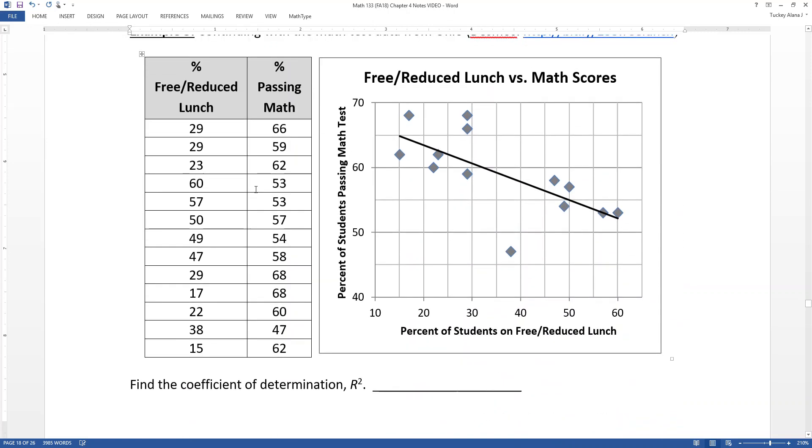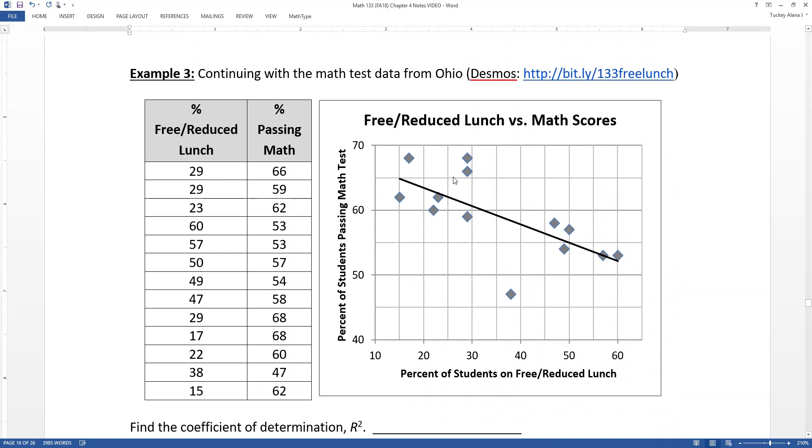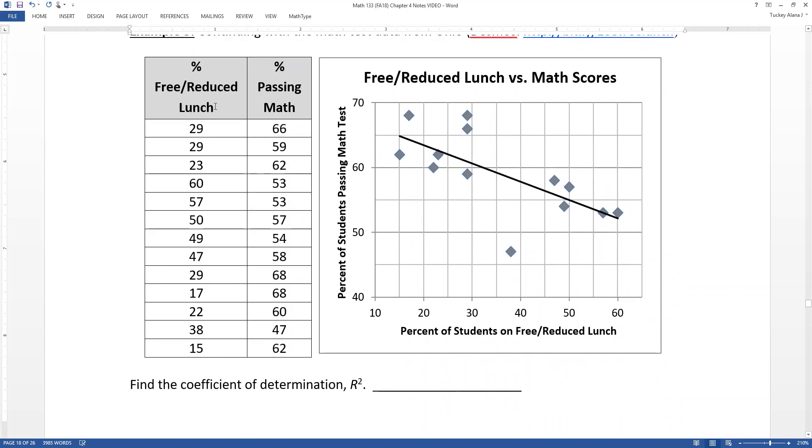All right, so now that we know how to interpret the R-squared value, it would be important for us to be able to find the R-squared value. So we have our data set from before, where we had the free-reduced lunch for 13 schools and the percent of those students in those schools that passed the state math exam in Ohio. And we want to find the coefficient of determination.